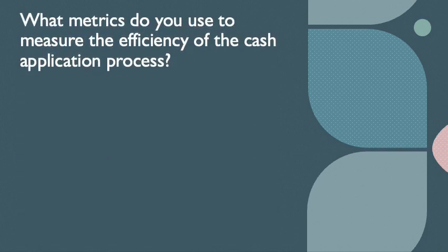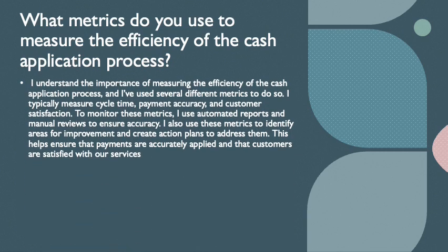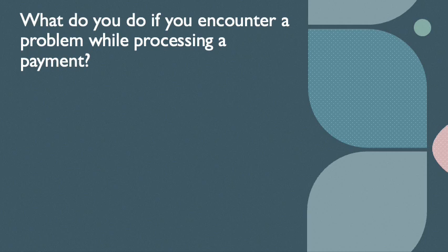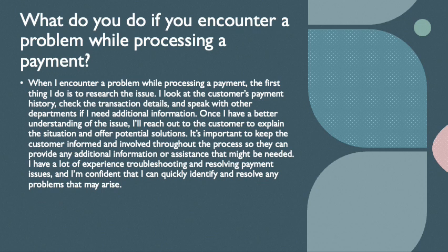The next question is: what metrics do you use to measure the efficiency of the cash application process? I understand the importance of measuring the efficiency of the cash application process and I have used several different metrics to do so. I typically measure cycle time, payment accuracy, and customer satisfaction. To monitor these metrics, I use automated reports and manual reviews to ensure accuracy. I also use these metrics to identify areas of improvement and create action plans, helping ensure that payments are accurately applied and that customers are satisfied with our services.